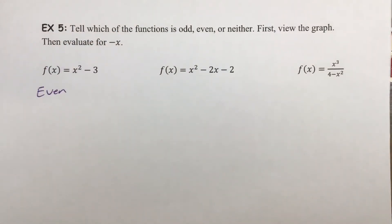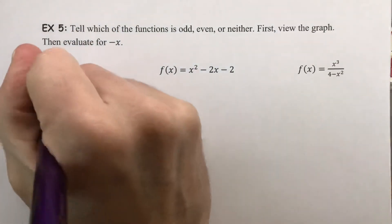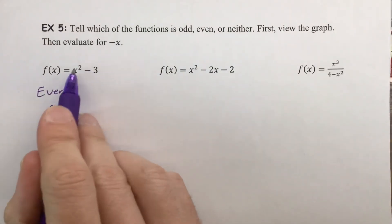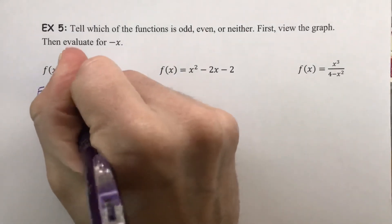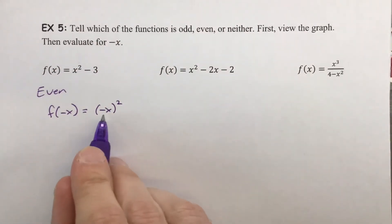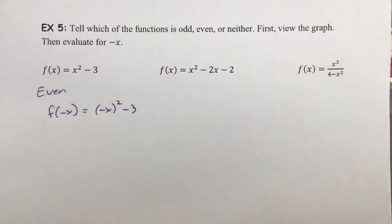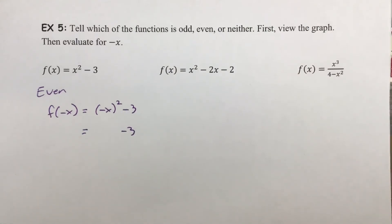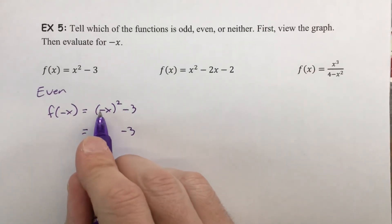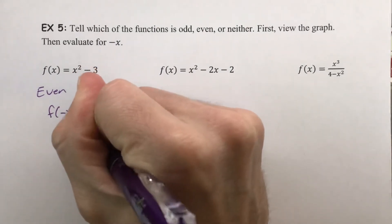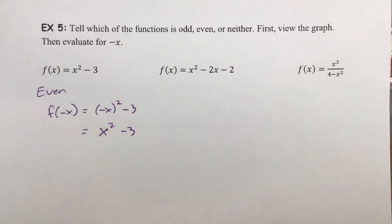Algebraically, to test it out, we want to see that if we plug in negative x, we get the original expression back. We've got (−x) squared minus 3. As we simplify, the minus 3 stays as it is. That negative is going to cancel when it gets squared, bringing you back to x squared minus 3 — the same thing we had. So this is, in fact, an even function.